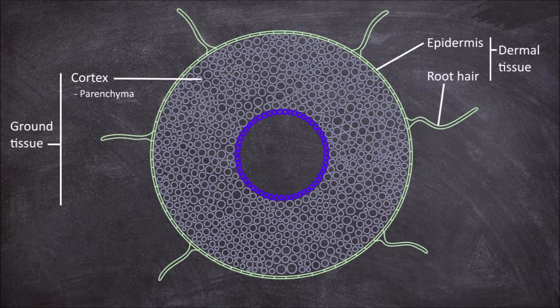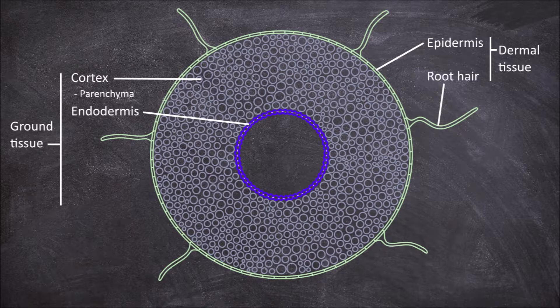The innermost layer of the cortex is called the endodermis. The cells of the endodermis are thickened along their radial axis creating what is called the casperian strip or band.